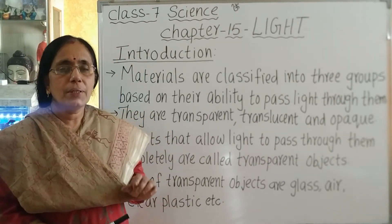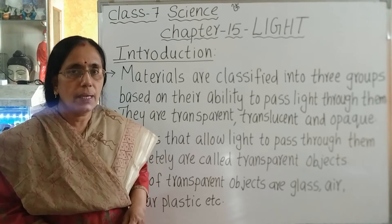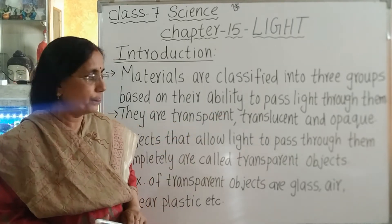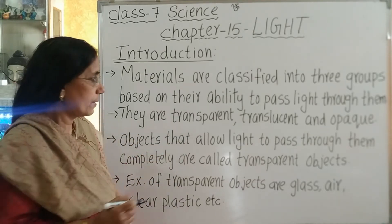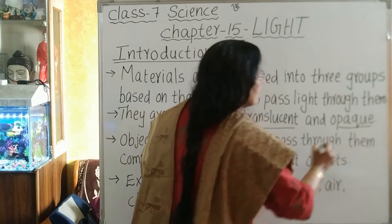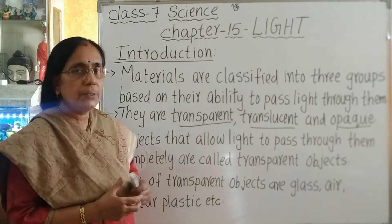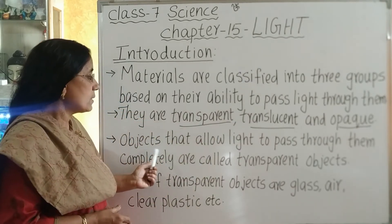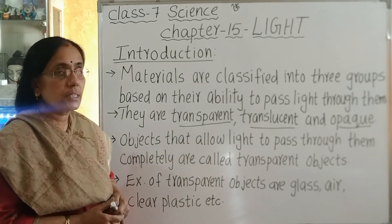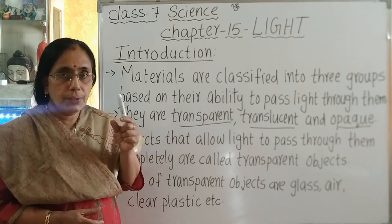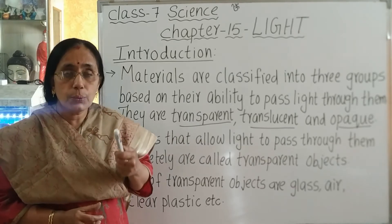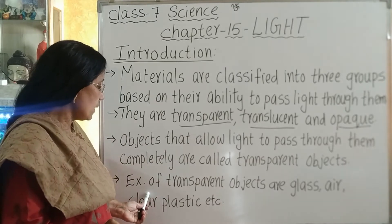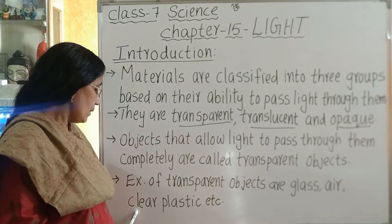Materials are classified into three groups based on their ability to pass light through them: transparent, translucent, and opaque. Objects that allow light to pass through them completely are called transparent objects. For example, glass — we can see through it. Other examples are air and clear plastic.